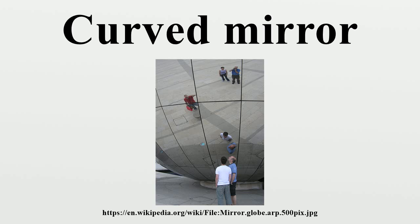The image on a convex mirror is always virtual, diminished, and upright. As the object gets closer to the mirror, the image gets larger, until reaching approximately the size of the object.